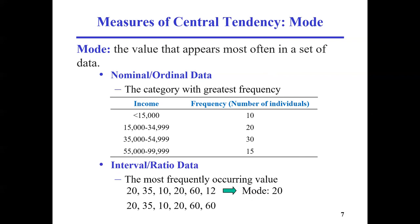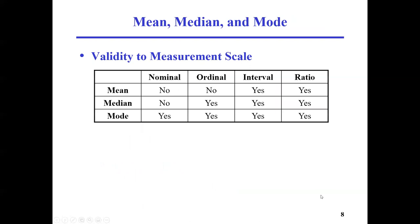What if we have 20, 35, 10, 20, 60, 60? Now 20 appears twice and 60 appears twice, so you have two modes because both 20 and 60 appear with equal highest frequency.